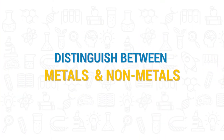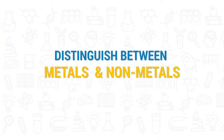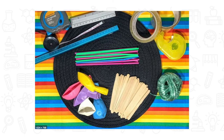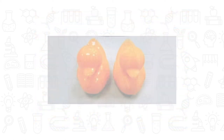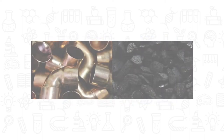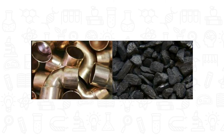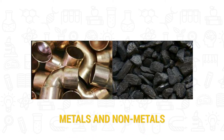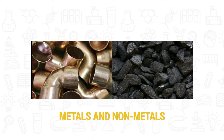Distinguish between metals and non-metals. Elements can be sorted into groups on the basis of different properties, such as dull or shiny, solid, liquid, or gas. The simplest way of classifying elements is by dividing them into metals and non-metals.